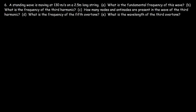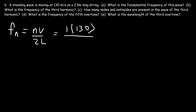Number 6. A standing wave is moving at 130 meters per second on a 2.5 meter long string. What is the fundamental frequency? To calculate the fundamental frequency, use the equation f = Nv over 2L. N is 1 for the fundamental frequency. So it's 1 times 130 over 2 times 2.5, which is 130 over 5. The fundamental frequency is 26 hertz.